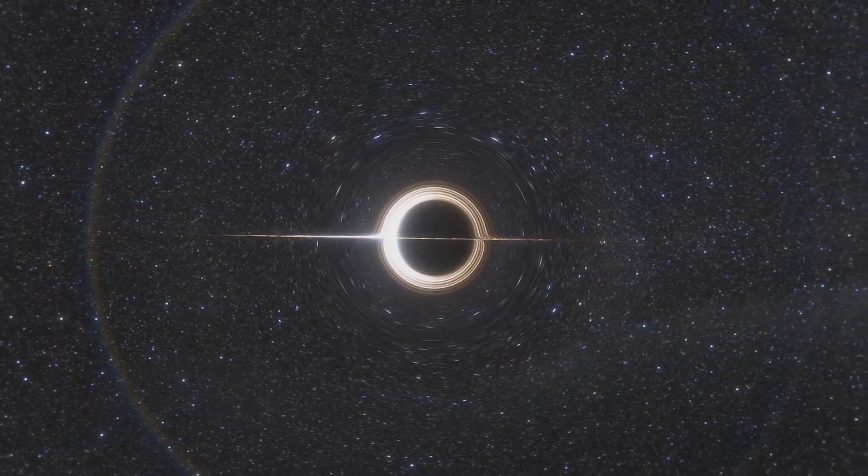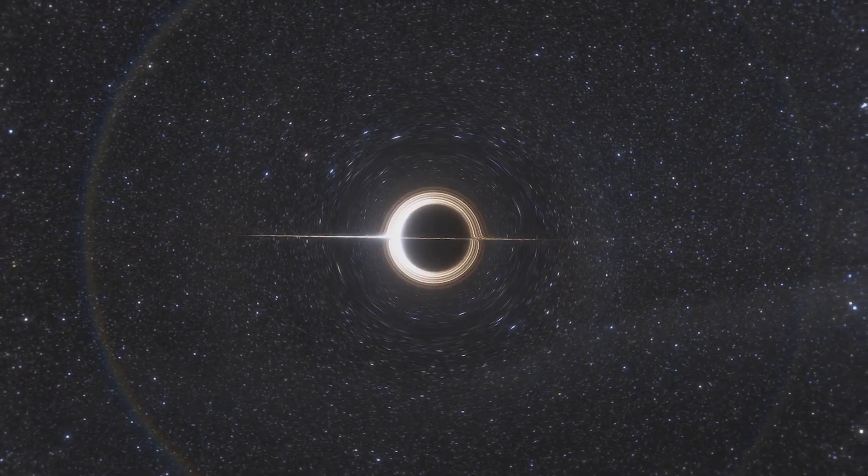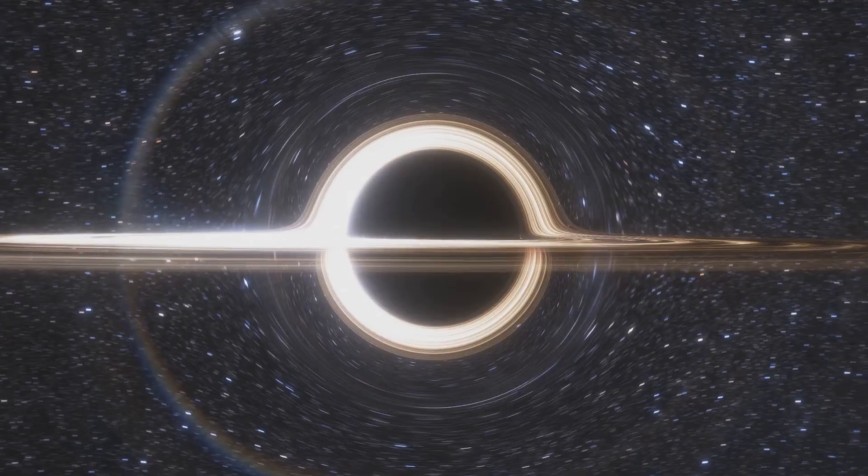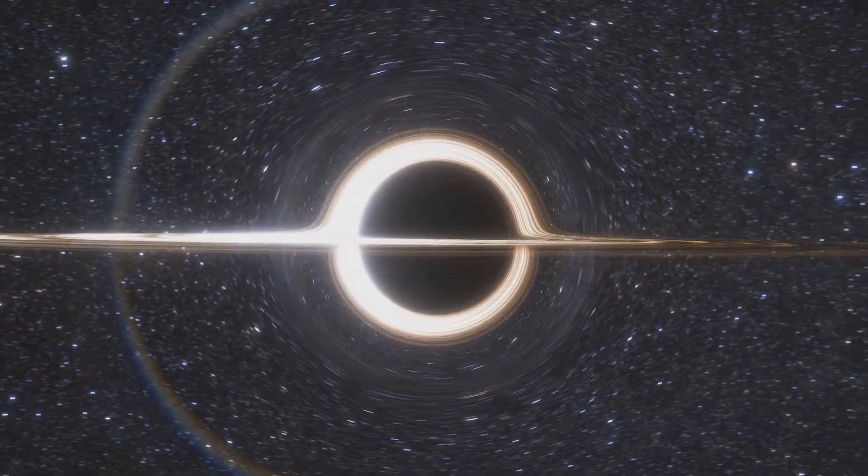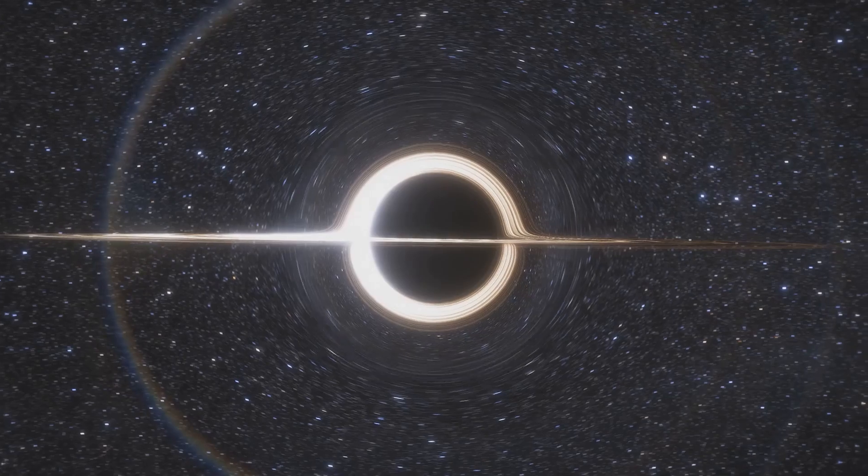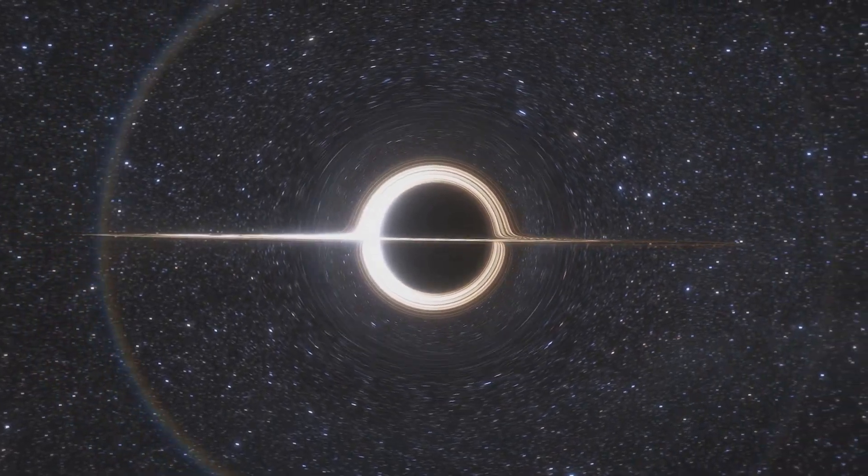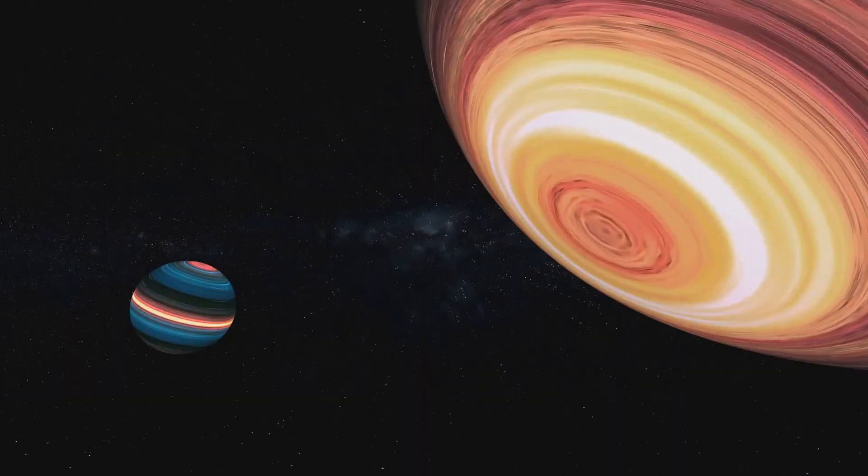Neutron stars are incredibly dense, with a mass greater than that of the Sun packed into a sphere only about 20 kilometers in diameter. In contrast, black holes have such strong gravitational pull that not even light can escape from them.